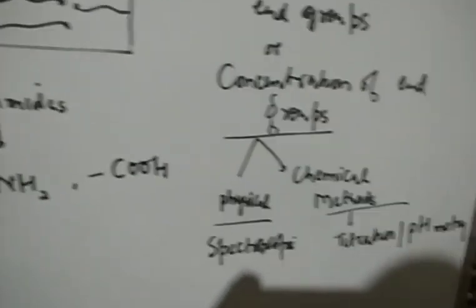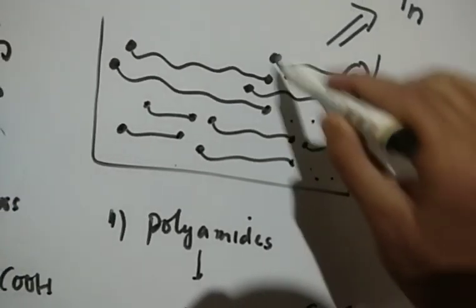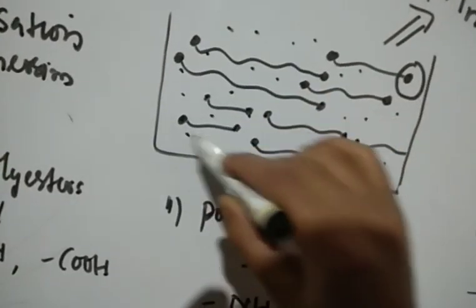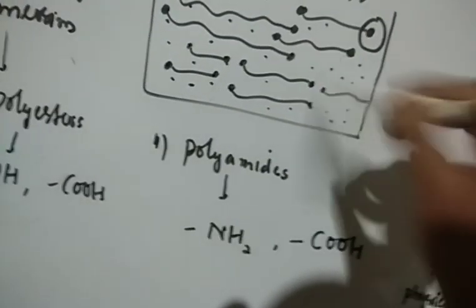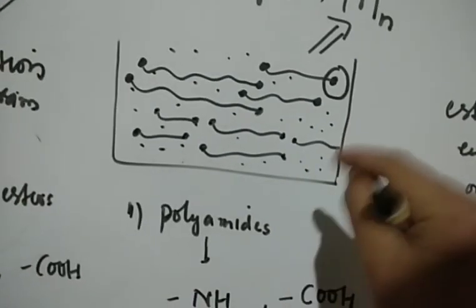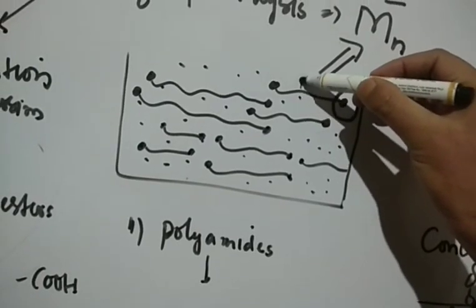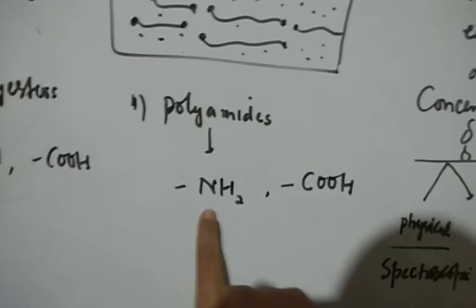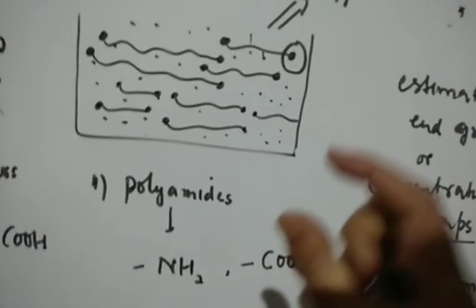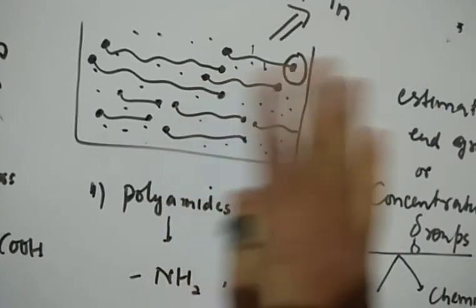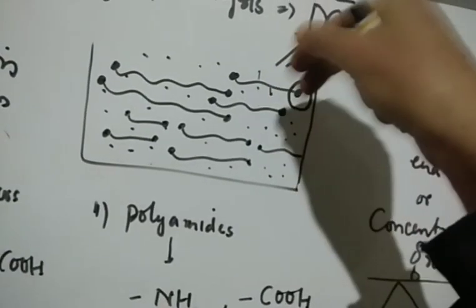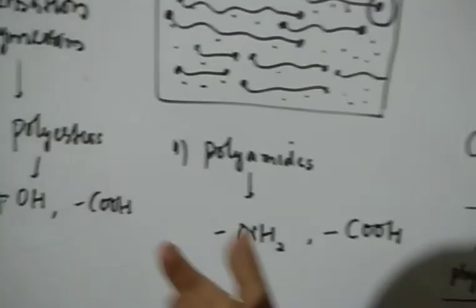There are limitations to this method. If the polymer sample has impurities that contain end groups like COOH, amine, or OH, the result will not be correct. Similarly, if other groups present on the polymer chain are also NH₂, COOH, or OH, the method will also give incorrect results. We assume the sample is free from such impurities and that other groups on the chain are not the ones being estimated.